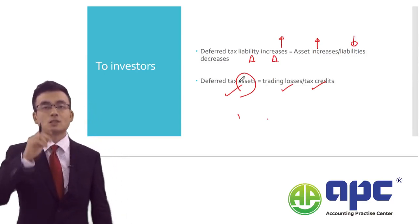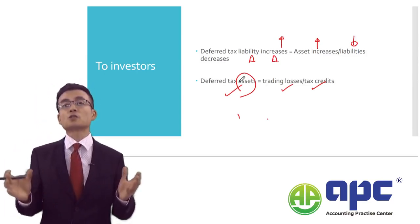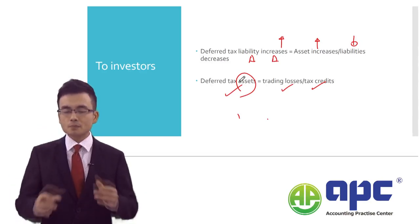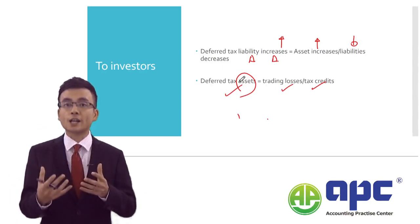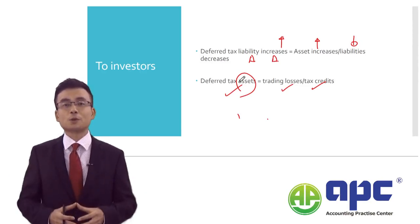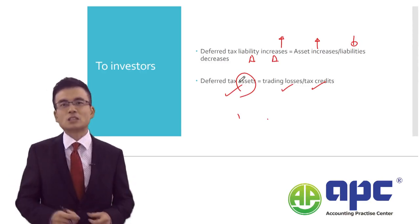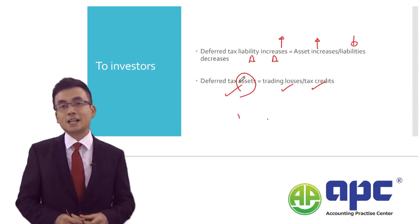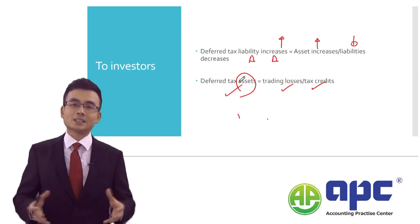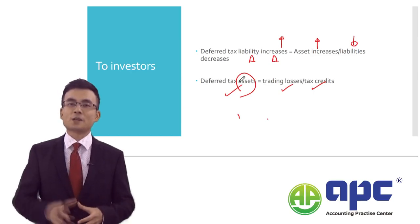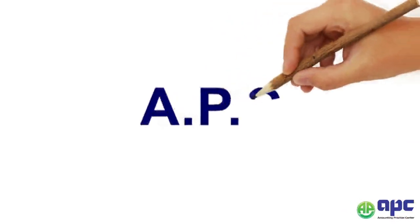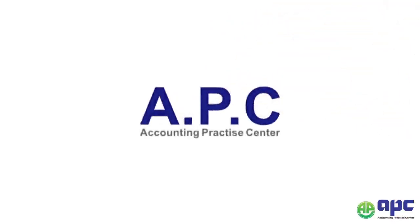In my auditing course as well — for example, in the ACCA AAA, or Advanced Audit and Assurance course — I will also explain how to audit and check the deferred tax asset value from the auditor's point of view. That will be quite interesting. I really look forward to seeing you in my course. This ends this video. Bye! APC Accounting for your future.